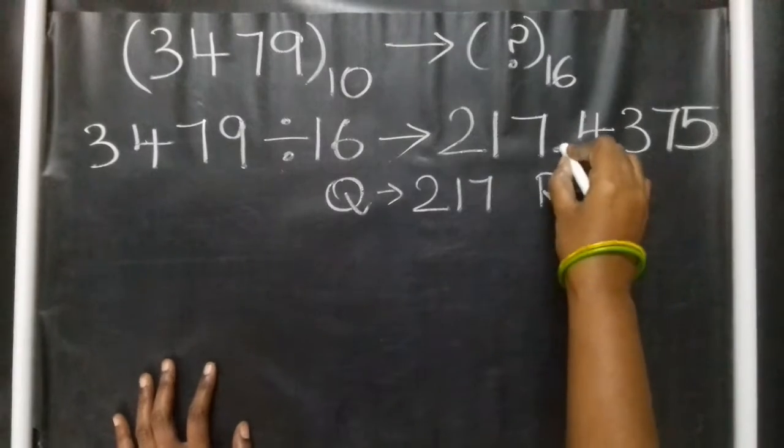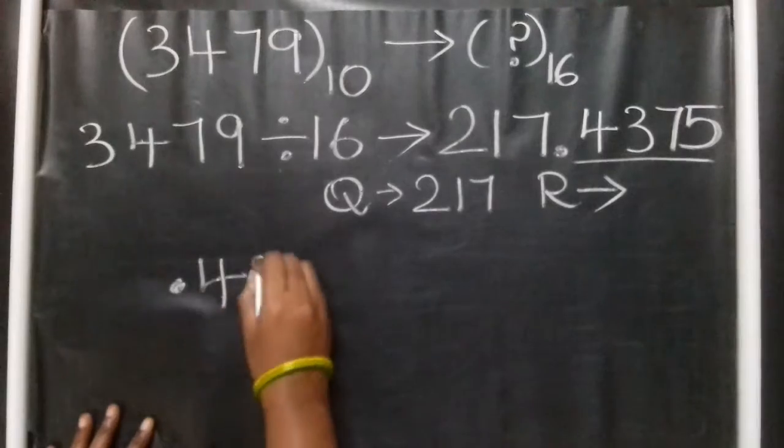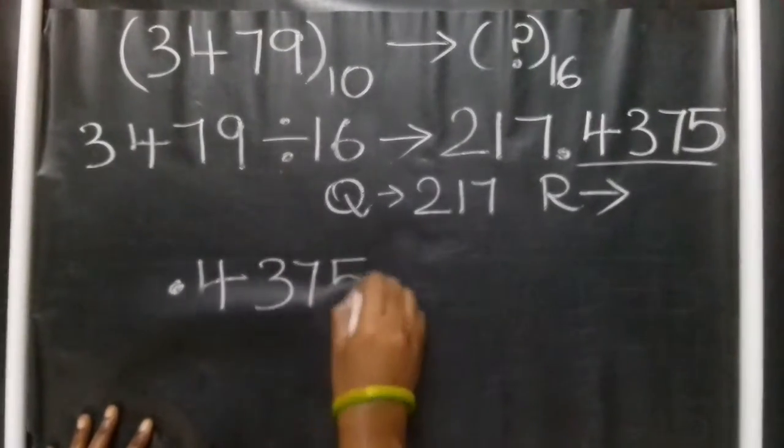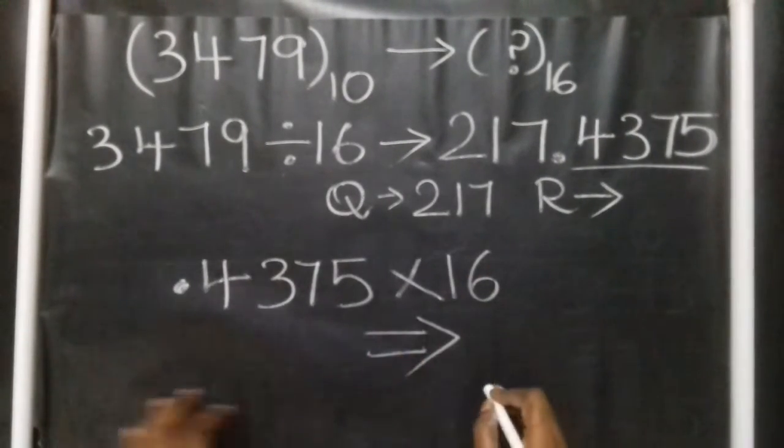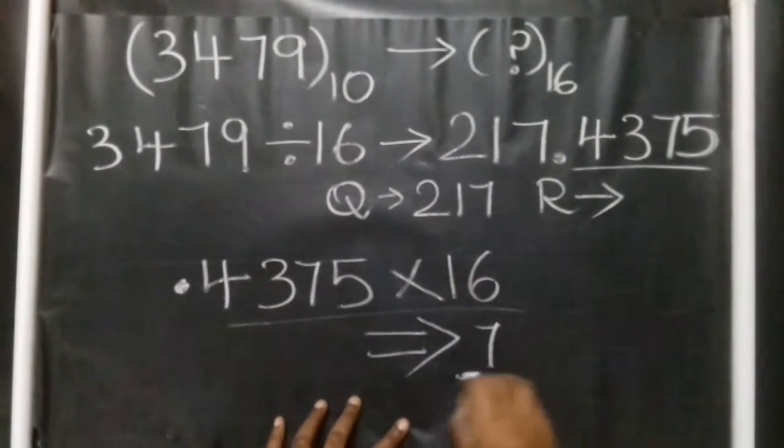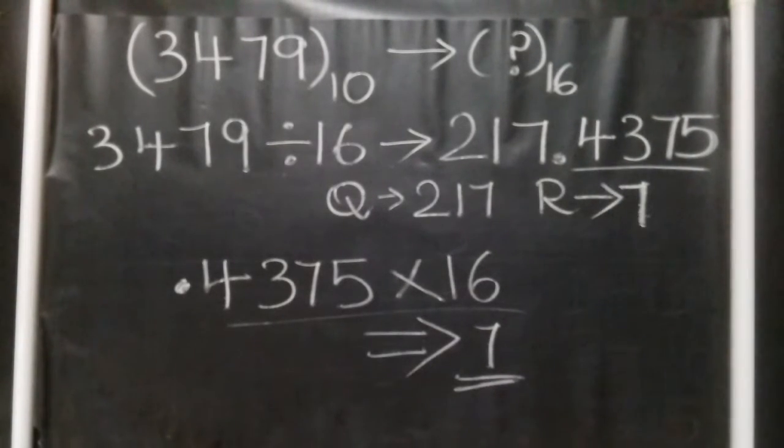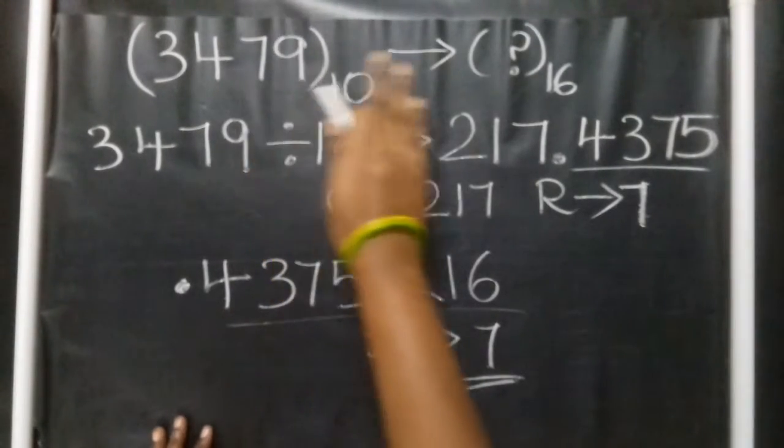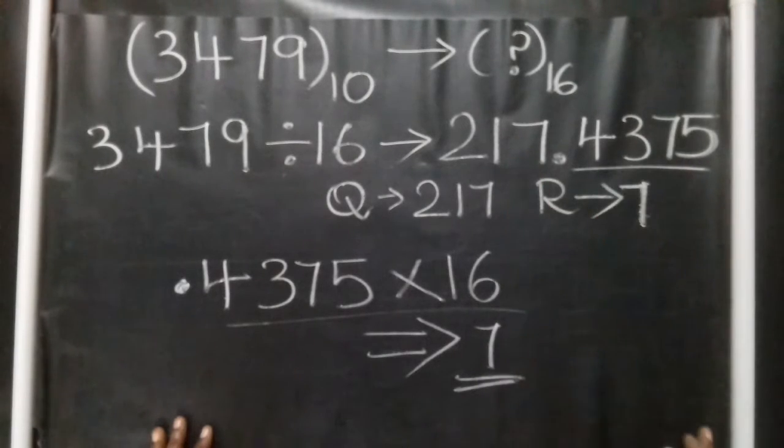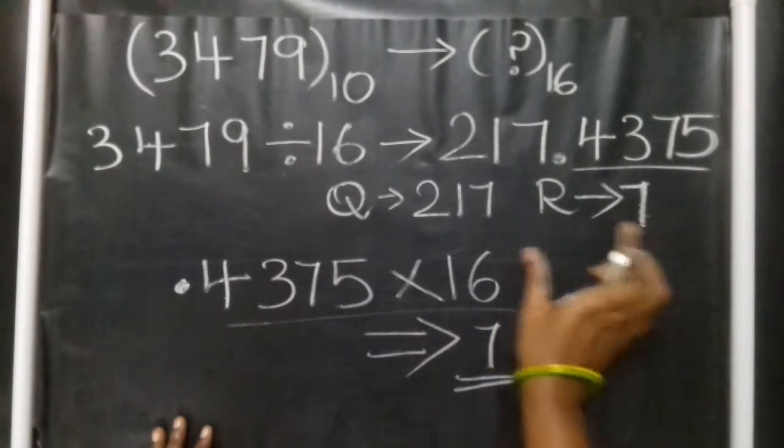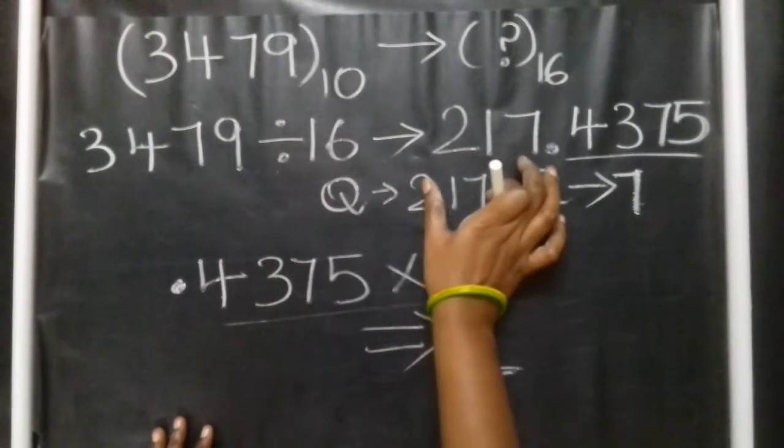Using the multiplication method, 3479 divided by 16 gives 217.4375. The quotient is 217 and remainder is 7. The remainder is what we need.